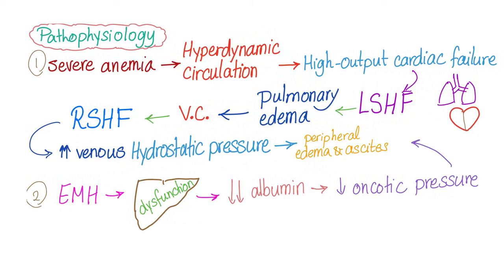What's the pathophysiology of hydrops fetalis? As you know from my video on RH incompatibility, we had severe anemia. Severe anemia leads to hyperdynamic circulation. Hyperdynamic circulation means high output cardiac failure — blood circulating very quickly, normal ejection fraction heart failure. Which side will fail? The left side of the heart. With left-sided heart failure, you have pulmonary edema and also pulmonary hypertension and vasoconstriction.